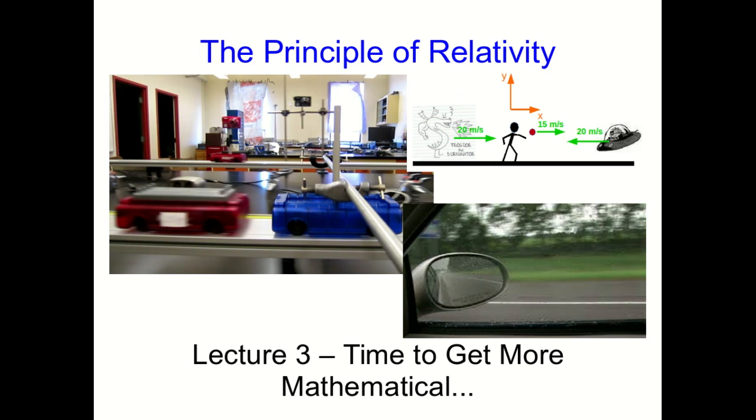Hello and welcome to lecture 3 of the Principle of Relativity in Physics 1104, and it's time to get a little more mathematical. What we're going to do in this lecture is take a bunch of the ideas we've seen in the previous two lectures and derive them with a little more mathematical rigor, and in the process we're going to get a whole bunch of other equations that we're going to find useful in problem solving.